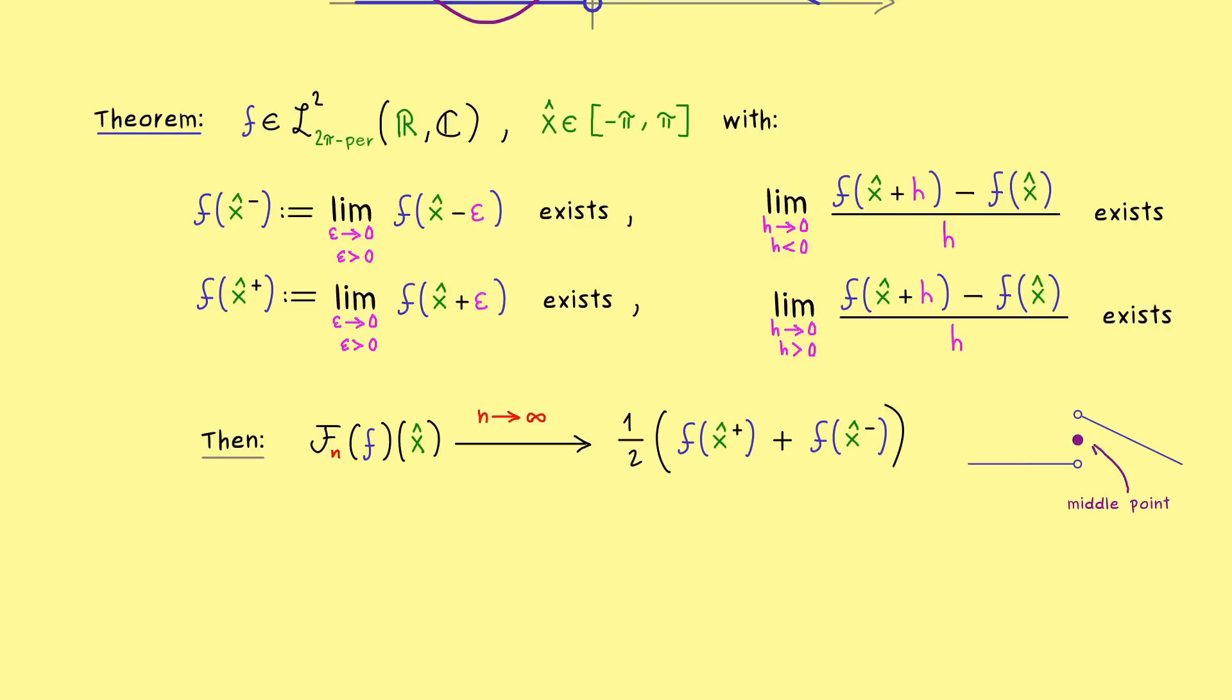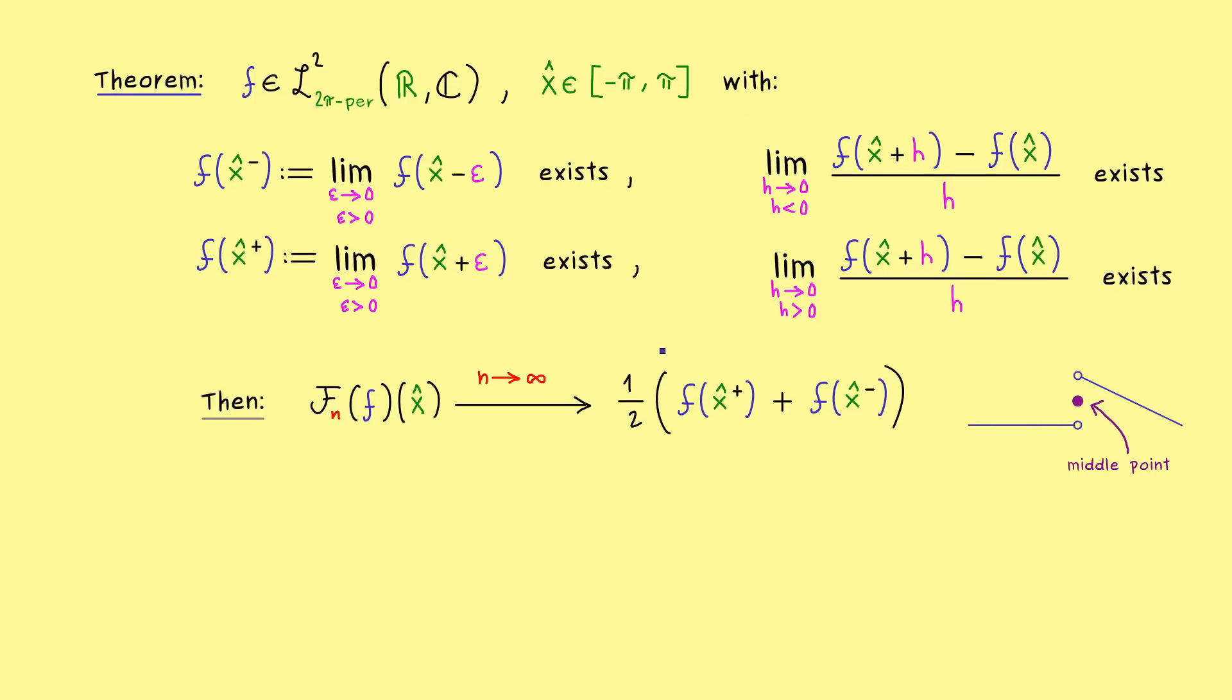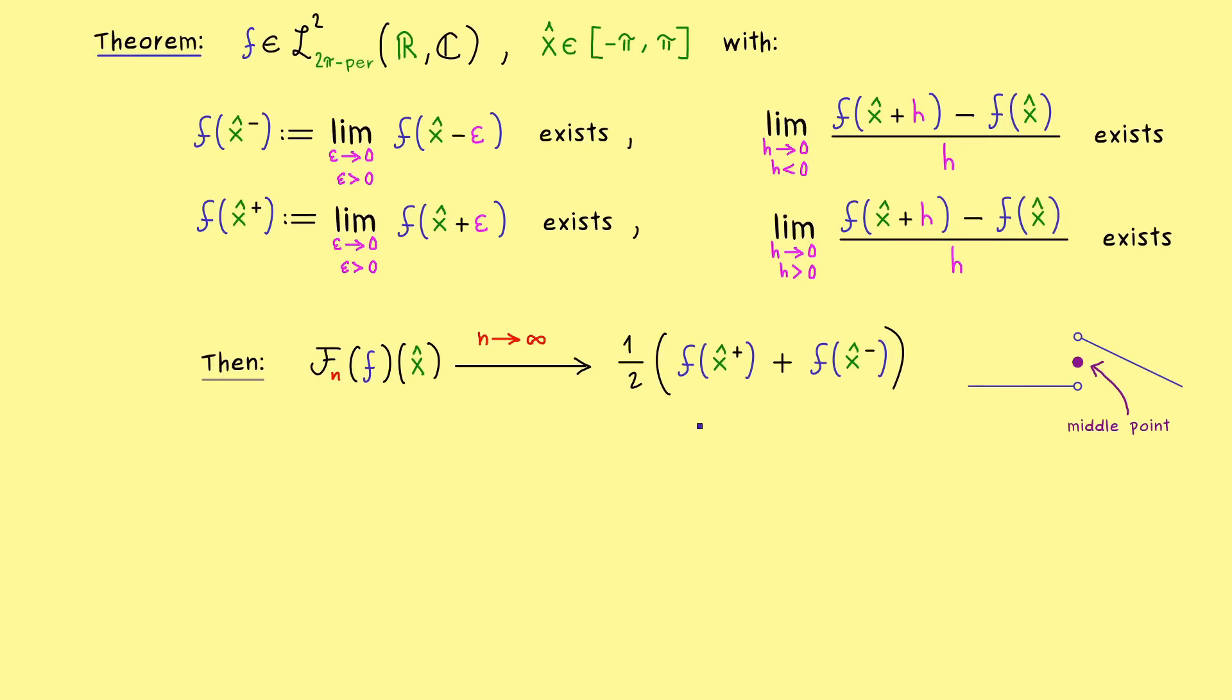Please note that the original value of f at x-hat does not matter at all. It's just about the two limits from left and right. So this is important to remember. It means that at a jump point we don't necessarily get the value of the function f back. This means we can only have pointwise convergence of the Fourier series at every point if the original function already has this property that the values are the middle points. But with that in mind, now you see that we have a weaker sufficient condition for the pointwise convergence of the Fourier series.